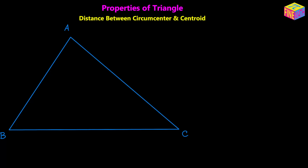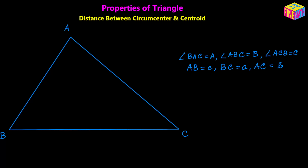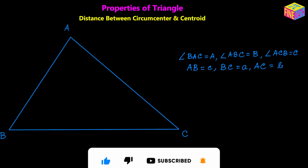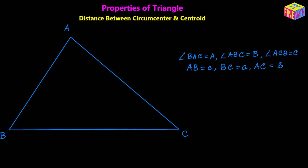Let's suppose we have a triangle ABC where angle BAC is denoted by uppercase A radian, angle ABC is denoted by uppercase B radian, and angle ACB is denoted by uppercase C radian. Also, side length AB is denoted by lowercase c units, side length BC by lowercase a units, and side length AC by lowercase b units. That's the standard notation for any triangle.